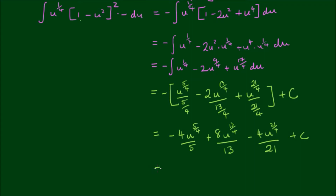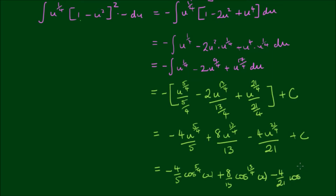To complete this we need to back-substitute u equals cosine of x. So we have negative four-fifths of cosine to the five-fourths power of x, plus eight-thirteenths times cosine to the thirteen-fourths power of x, minus four-twenty-firsts times cosine to the twenty-one-fourths power of x, plus c. It's perfectly fine to leave the answer in these terms — there's no need to go further than that.